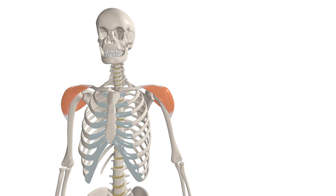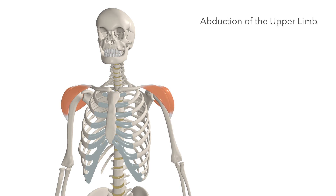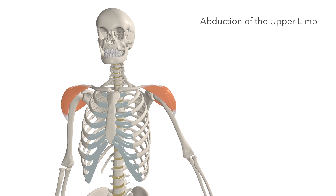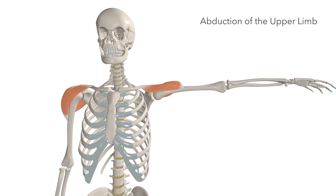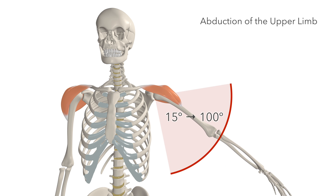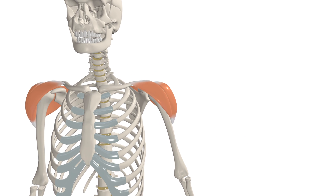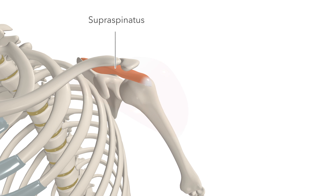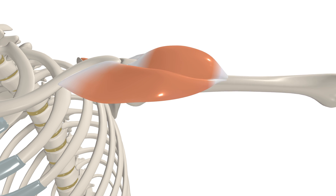And when all three heads are acting together, the deltoid performs abduction of the upper limb. It's essentially the key muscle responsible for this movement, and in particular, when the upper limb is between 15 and 100 degrees of abduction. Another muscle, the supraspinatus, initiates the movement, abducting the upper limb for the first 15 degrees, and then the deltoid takes over between 15 and 100 degrees.